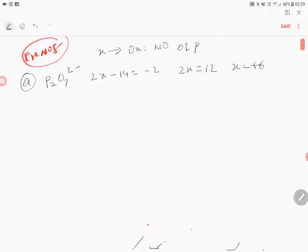Next, Option B: P2O6^2-. For this, the oxidation number of phosphorus is plus 5.